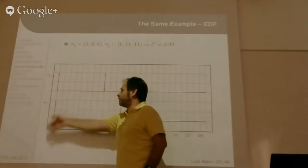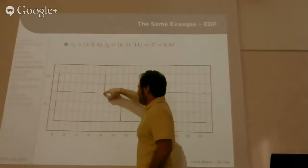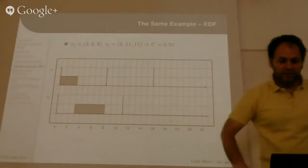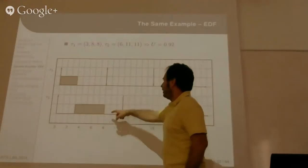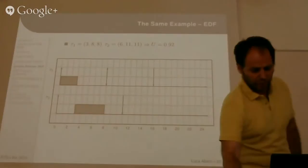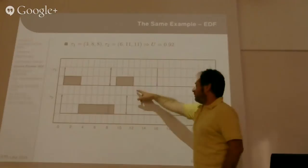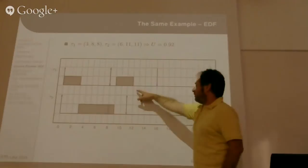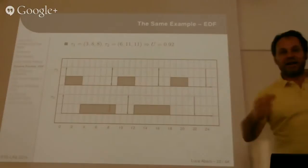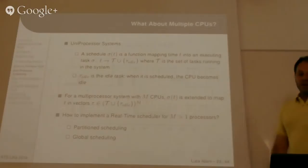What happens with EDF? At time 0 we have simultaneous arrival of two jobs. The first job of task 1 has a shorter deadline, so it is scheduled first and finishes at time 3. Then task 2 is scheduled up to time 8. Then the second job of task 1 arrives with deadline 16, so the shortest deadline task is still tau_2, which continues to execute. Then the second job of task 1 can be executed, and so on. No deadline is missed. These simple examples already provide evidence that EDF has advantages with respect to rate monotonic.